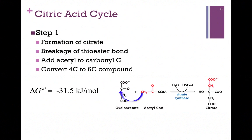Here's our first step in the cycle where we form citrate. We start with oxaloacetate, a four-carbon compound, and add the acetyl group from acetyl-CoA. Our product citrate is a six-carbon compound. The methyl group on the acetyl will attack the carbonyl carbon at position two of oxaloacetate, giving us our six-carbon citrate. In the process, we break the thioester bond of the coenzyme A molecule, releasing it and 31.5 kilojoules per mole of energy, making this reaction irreversible as indicated by the one-way arrow.